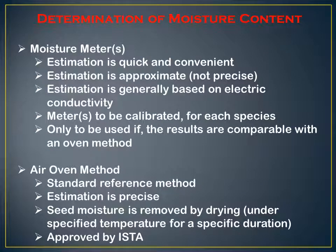Seed moisture should be less than 14 percent for long-term storage. There are two methods to determine moisture content: the moisture meter and the oven method. The moisture meter provides quick and convenient but approximate estimation, based on electrical conductivity, and must be calibrated for each species and only used if results are comparable with oven results. The oven method is the standard reference method — estimation is precise, and seed moisture is removed by drying under a specified temperature for a specific duration, approved by ISTA.